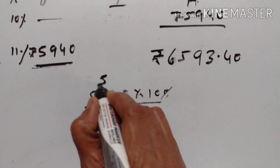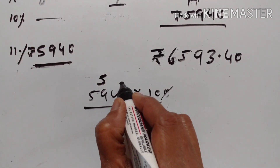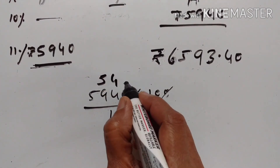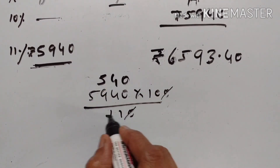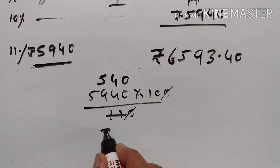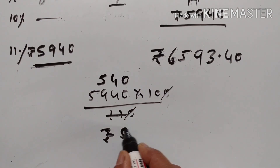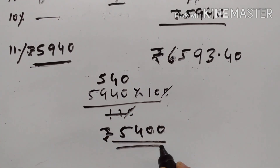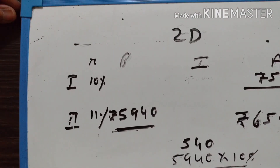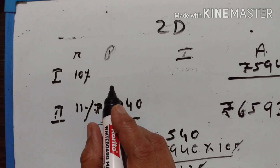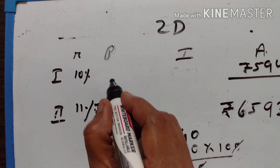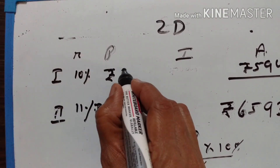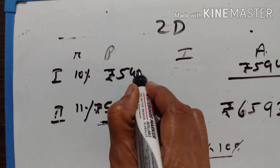11 times 5 is 55, 4 remains; 11 times 4 is 44. The result is Rs. 5,400. The principal — the sum — is equal to Rs. 5,400.